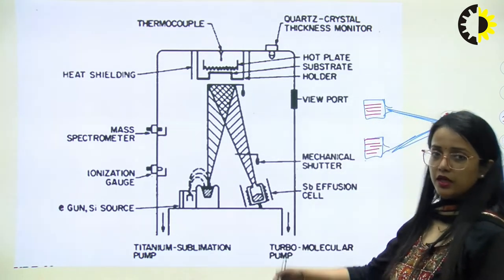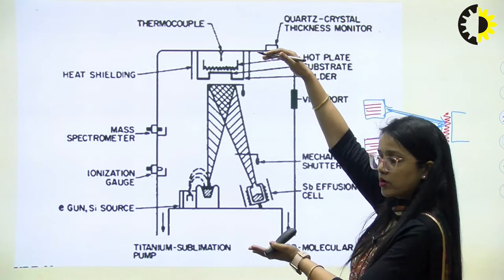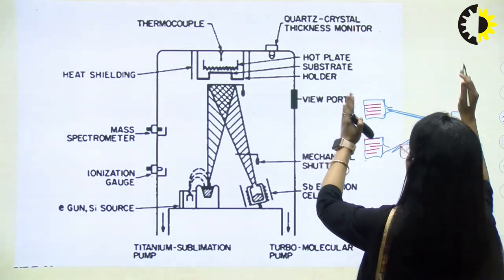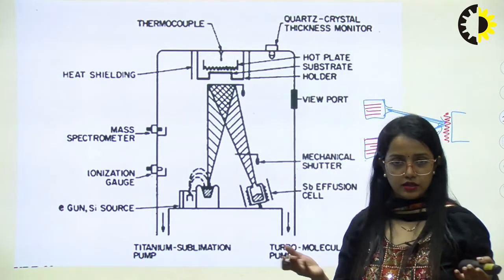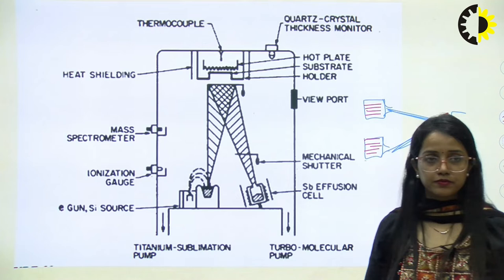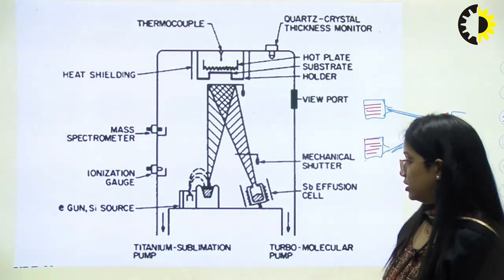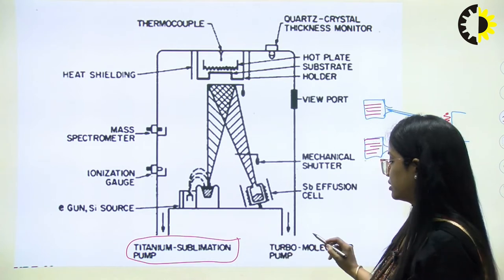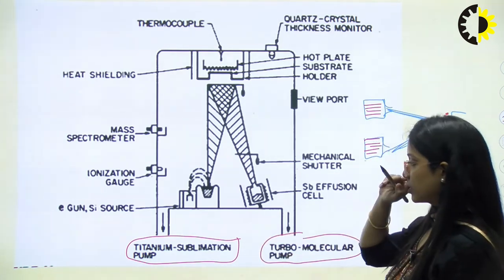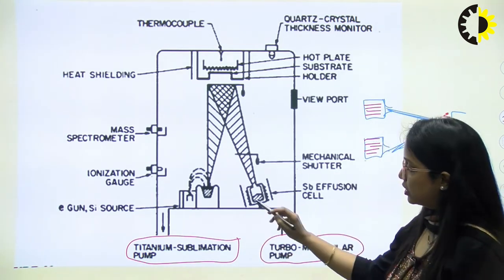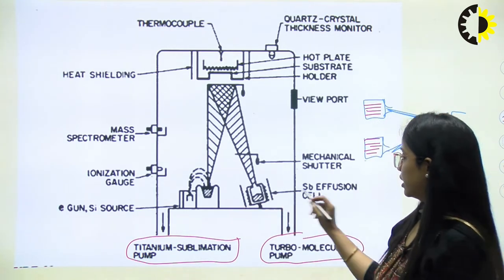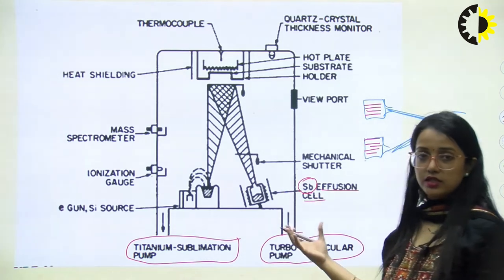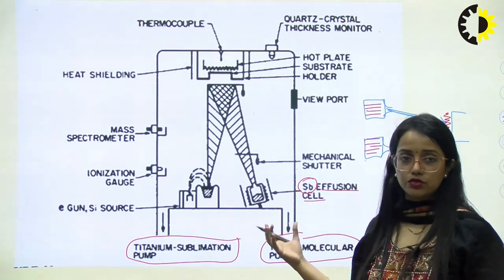Depending upon the apparatus, this is a process where we are keeping the nozzles at the bottom and we can rotate it to have the nozzles on the left and right side. Here we have a titanium sublimation pump and a turbo pump. The effusion cells will have the desired chemical which we need to settle.